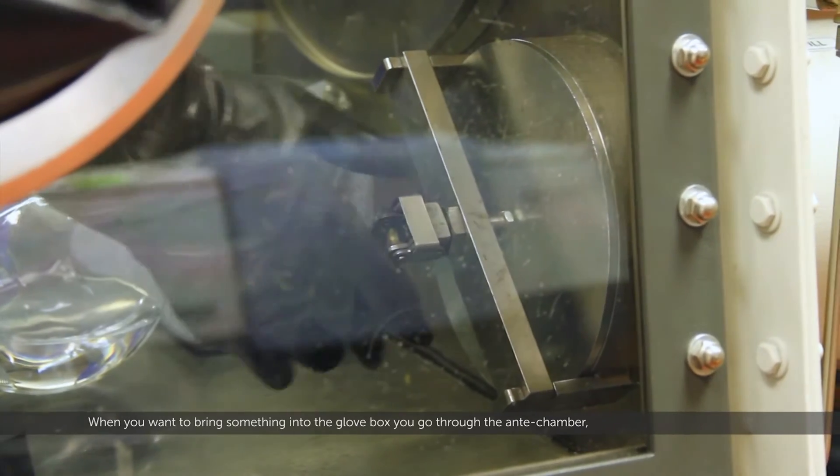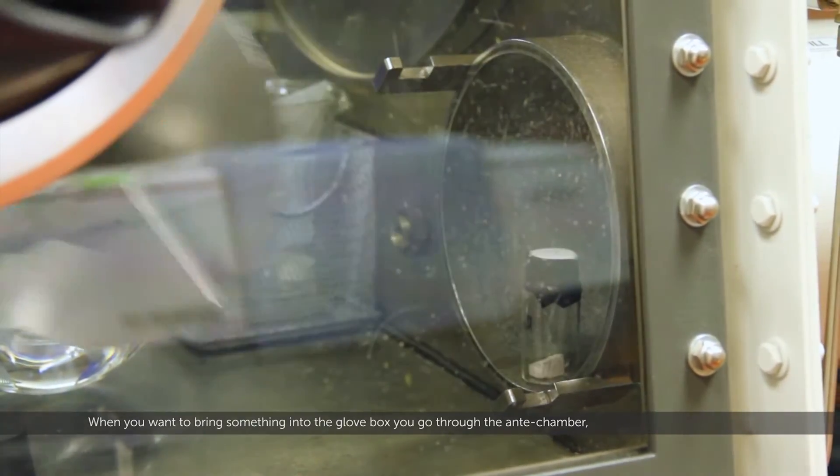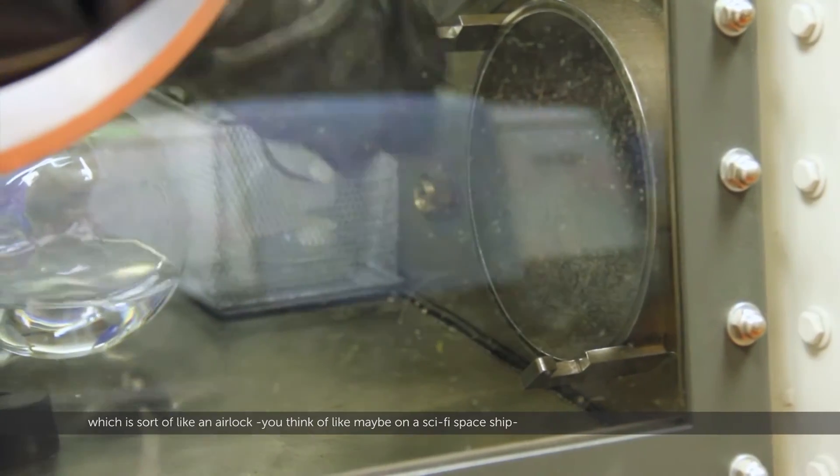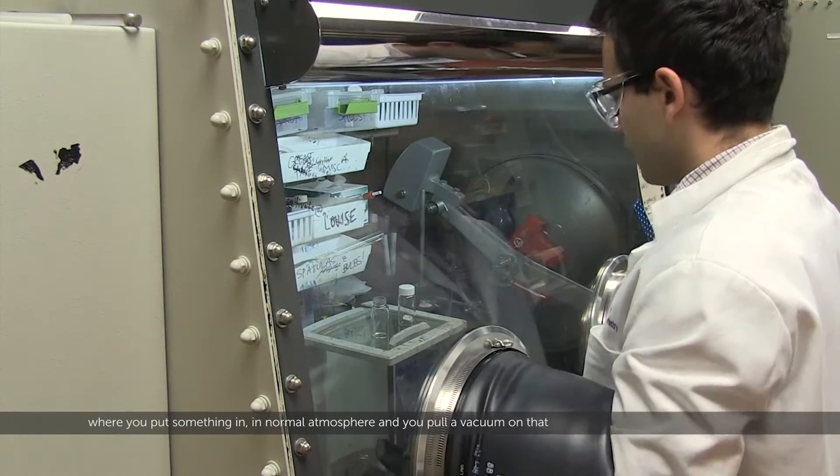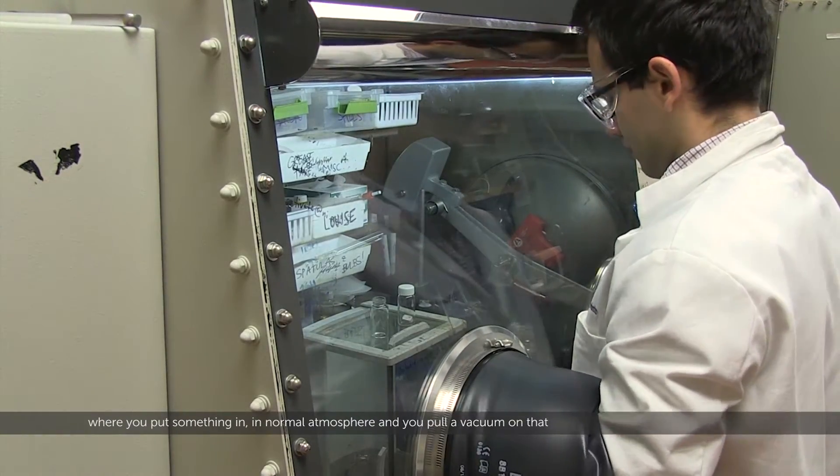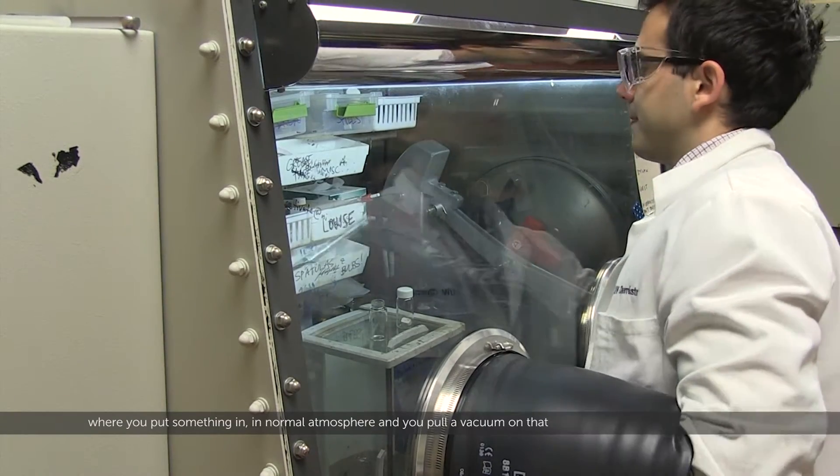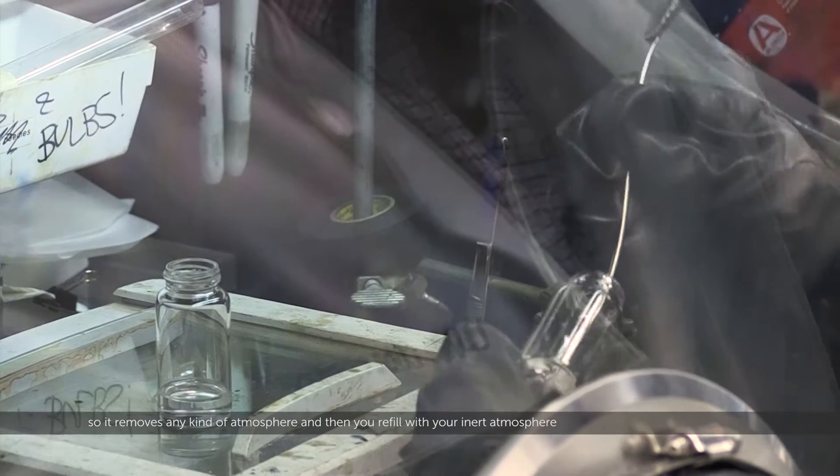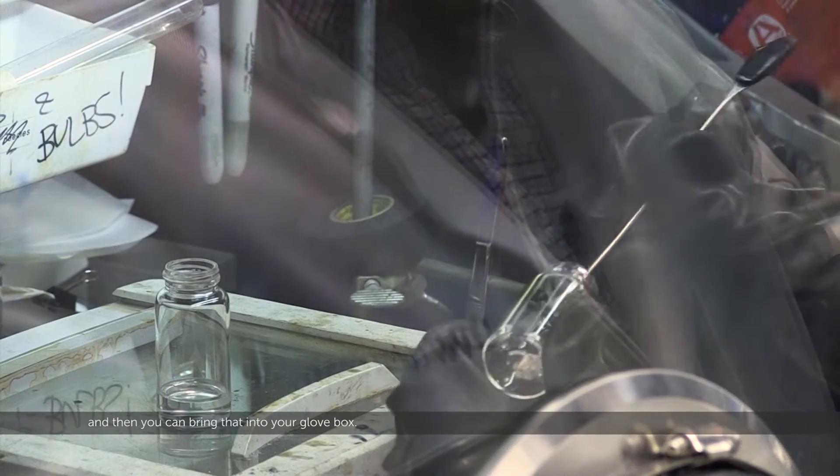When you want to bring something into the glovebox we go through the antechamber, which is sort of like an airlock you think of like maybe on a sci-fi spaceship. You put something in in normal atmosphere, you pull vacuum on that so it removes any kind of atmosphere, and then you refill with your inert atmosphere and then you can bring that into your glovebox.